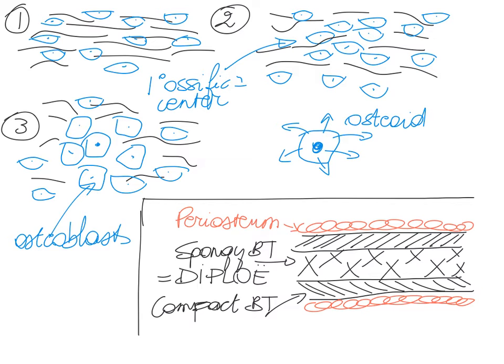What will eventually happen after these osteoblasts have secreted osteoid is that calcium and phosphate and other minerals do get deposited. So eventually we are going to see that in the osteoid, minerals will start appearing. The osteoid does eventually mineralize, and these minerals arise from those osteoblasts themselves.